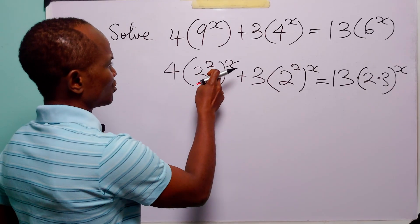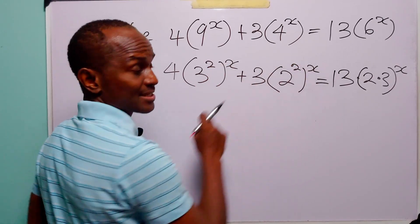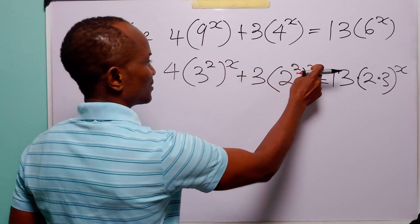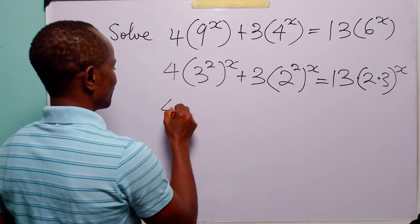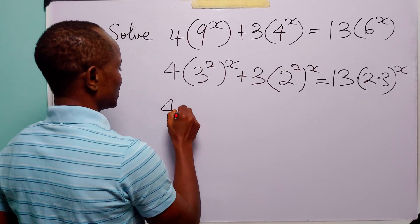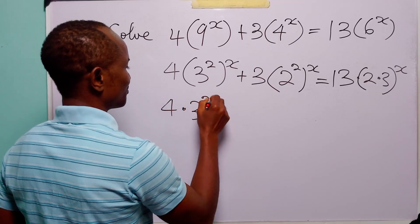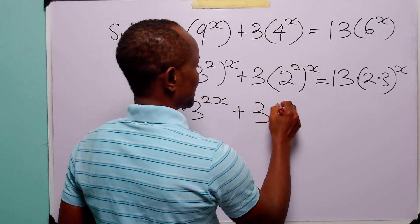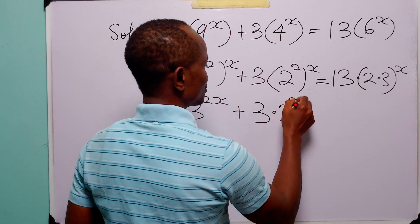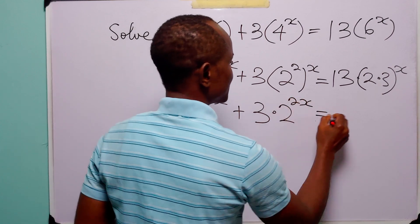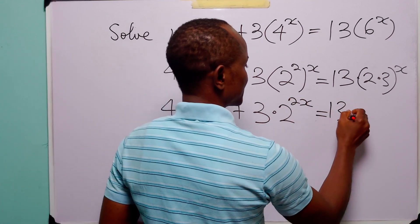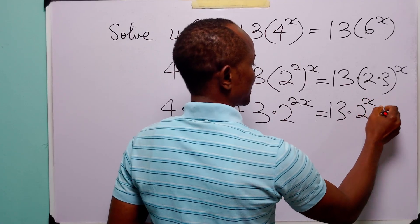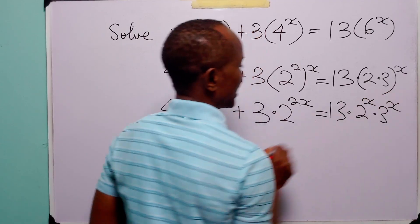When we have two powers like this, to open the bracket we multiply both powers. So here we have 4 times 3 to power 2x plus 3 times 2 to power 2x, and this is equal to 13 times 2 to power x times 3 to power x.